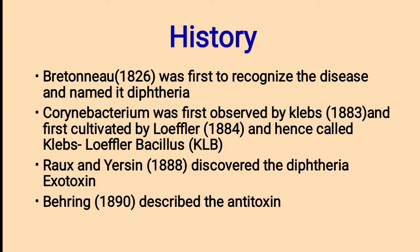Bretonneau in 1826 was first to recognize the disease and named it as diphtheria. Corynebacterium was first observed by Klebs in 1883 and first cultivated by Löffler in 1884, and hence called as Klebs-Löffler Bacillus. Roux and Yersin in 1888 discovered the diphtheria exotoxin. Behring in 1890 described its antitoxin.